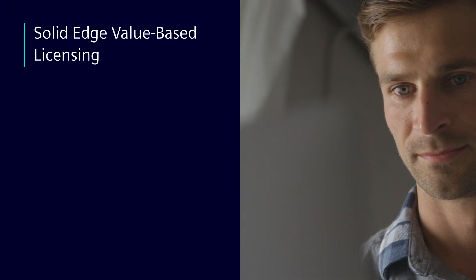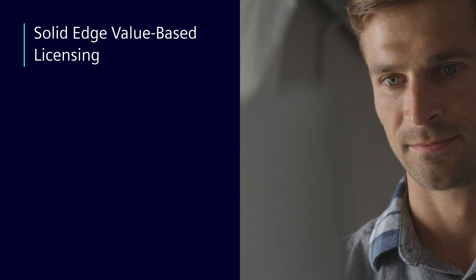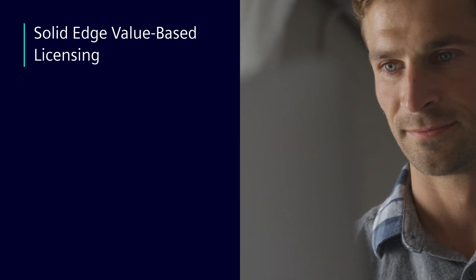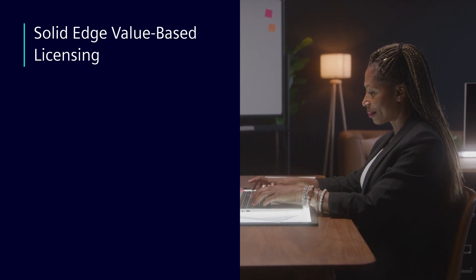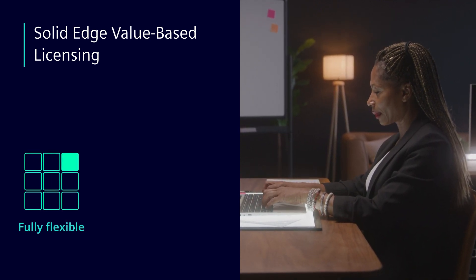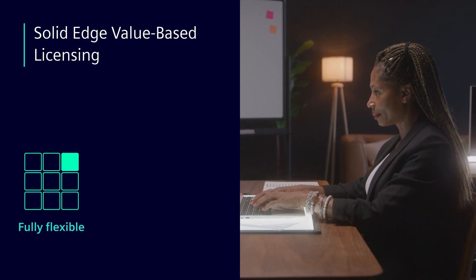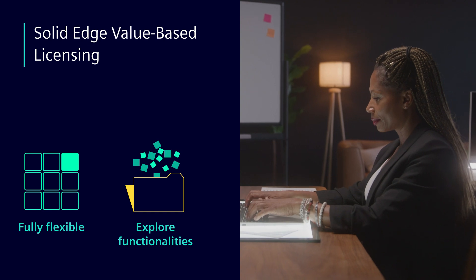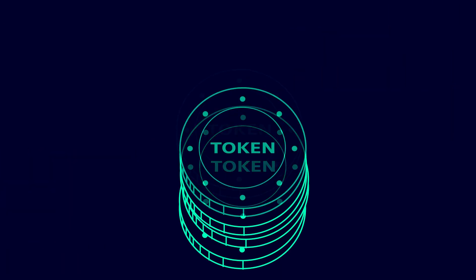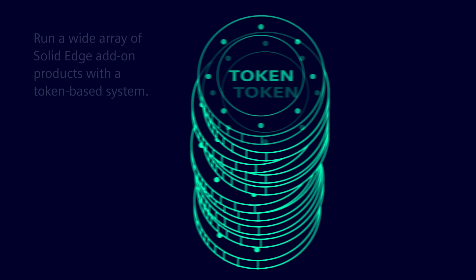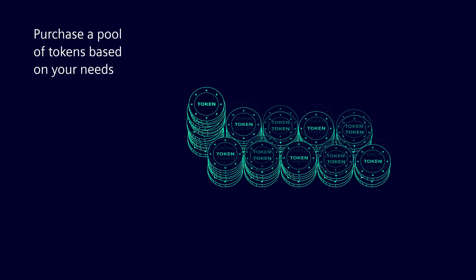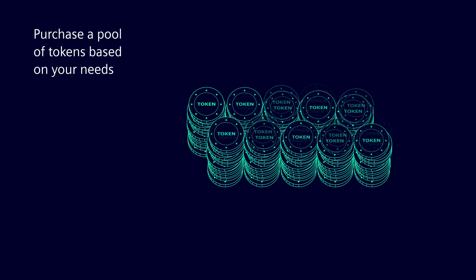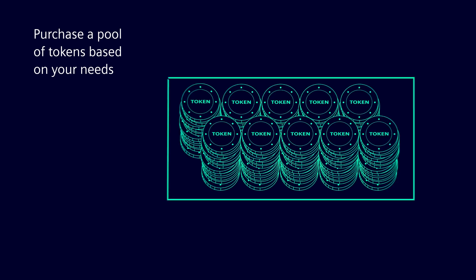Let's have a look at how value-based licensing works, starting with the base application: Solid Edge Classic or Premium. Value-based licenses offer a fully flexible environment in which users can explore different functionalities. Companies acquire a set of tokens which allow the running of a wide array of applications. Tokens are available in yearly subscription packs that make the add-on products available as a single shareable bundle.